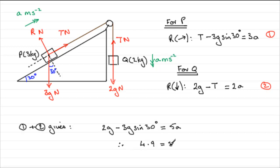4.9 then equals 5A. Divide both sides by 5 and you end up with A equaling exactly 0.98. Don't forget the units. It will be meters per second per second. So there's our acceleration.